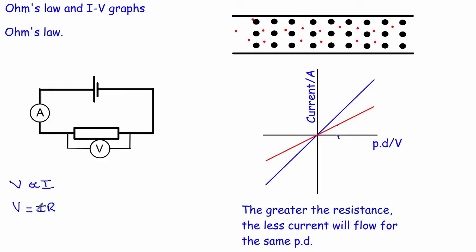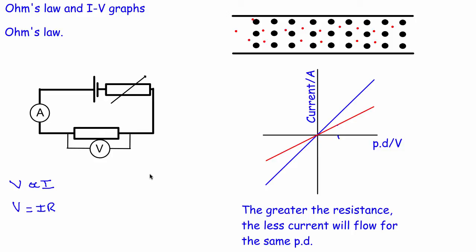We can check that this is true for various different components and we can draw graphs. This is a current-potential difference graph. Experimentally we would have a power supply, the component we're looking at, the voltmeter goes around the component, and the ammeter is part of the actual circuit so it can measure the current. We want to alter the potential difference and measure the current. One way to do that is to use a variable resistor and put it in the circuit.